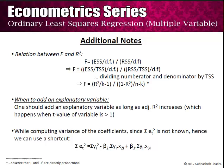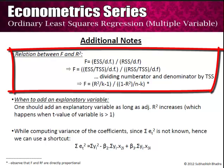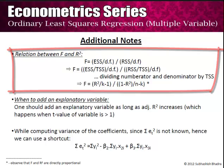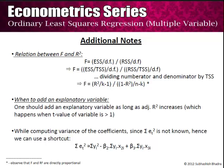Finally, some additional notes. The relationship between F and R-square is important. F equals ESS divided by its degrees of freedom, divided by RSS divided by its degrees of freedom. If you divide both the numerator and denominator by the total sum of squares, you get F = [R²/(k-1)] / [(1-R²)/(n-k)]. Hence F and R-square are directly proportional: the higher the R-square, the higher the F value, and hence the higher the chance it will fall in the rejection region. Because of this, the ANOVA table can also be written in terms of R-square.